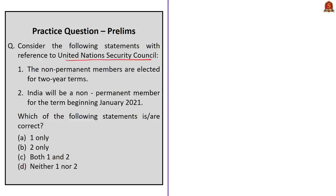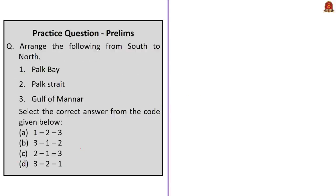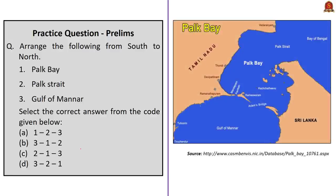The practice question on the United Nations Security Council is a two-statement question. The first statement says non-permanent members are elected for two-year terms. The second statement says India will be a non-permanent member for the term beginning January 2021 — India will be a member from January 2021 till the end of 2022. Both statements are correct, so the correct answer is option C — both 1 and 2. The next question asks you to arrange three places from south to north: Palk Bay, Palk Strait, and Gulf of Mannar. The correct answer is option B — from south: Gulf of Mannar, then Palk Bay to its north, and Palk Strait to the north of Palk Bay — giving the order 3, 1, 2.